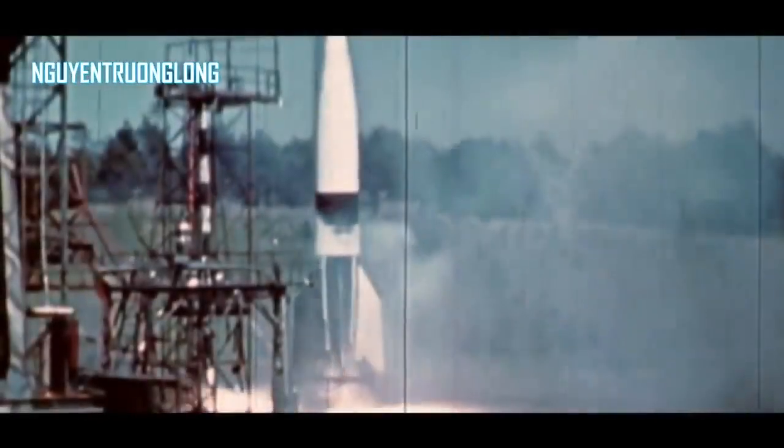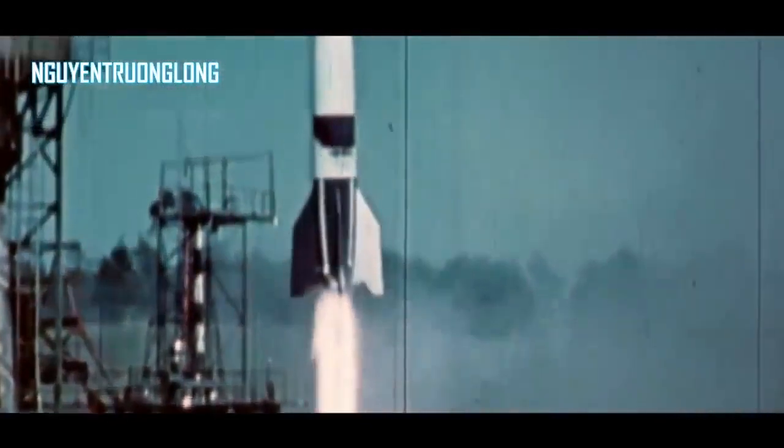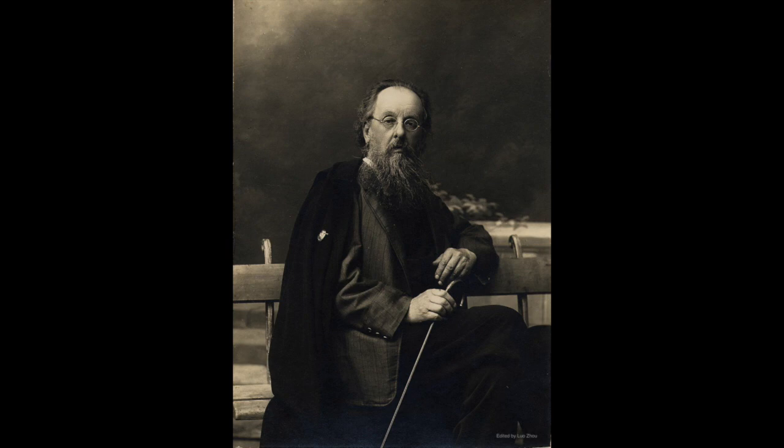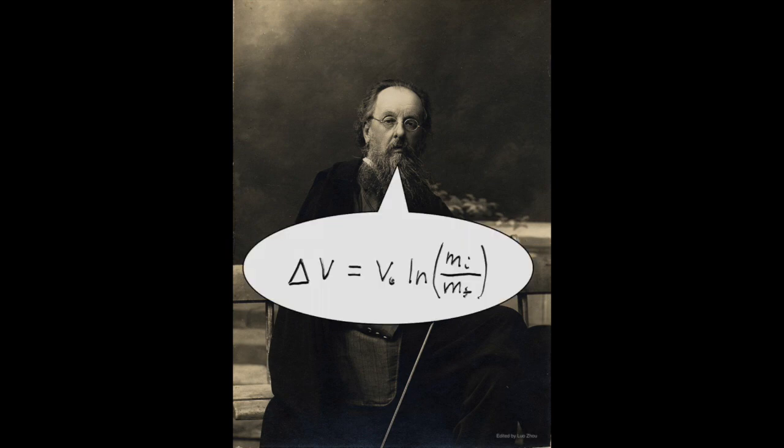When early rocket scientists were attempting to formulate an equation that could describe the motion of a rocket, which was then a concept popular in imagining future space travel, the equation that was formulated was named the Tsiolkovsky rocket equation, attributed to Russian early rocket scientist Konstantin Tsiolkovsky, who discovered the equation independently in 1903.